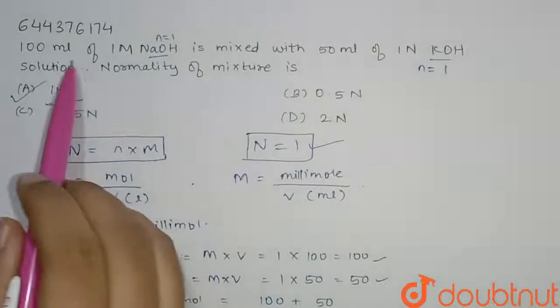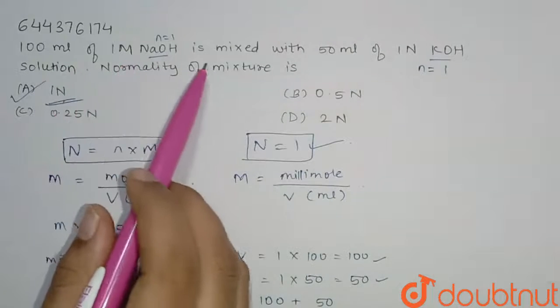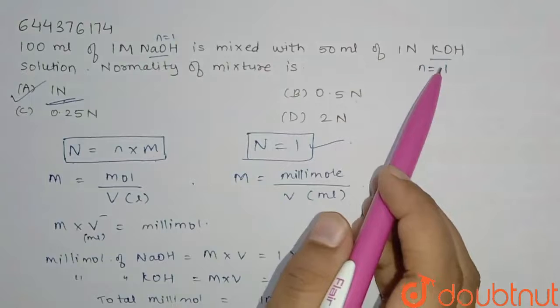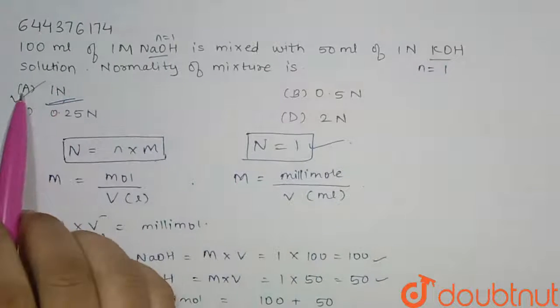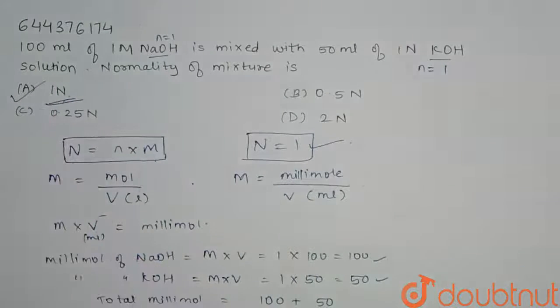So our question was 100 ml of 1 molar NaOH is mixed with 50 ml of 1 normal KOH solution. Normality of mixture is 1 normal, that is option A. Thank you.